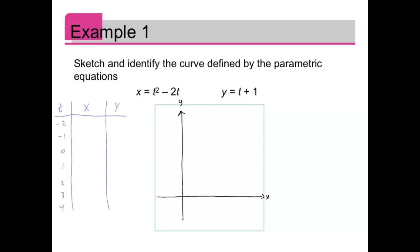When t is negative 2, we plug t into the x equation. We get negative 2 squared, so that's 4 plus 4, which is 8. And y is t plus 1, so negative 2 plus 1 is negative 1. So I get the point (8, negative 1). When t is negative 1, x is 1 plus 2, which is 3. Y is negative 1 plus 1, which is 0. So I get the point (3, 0).